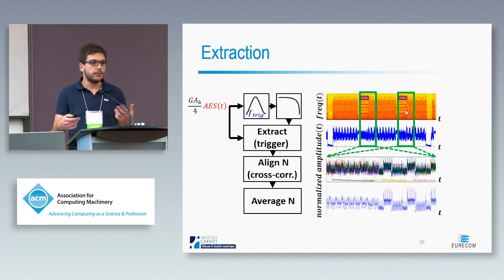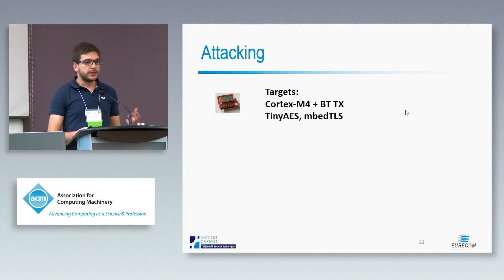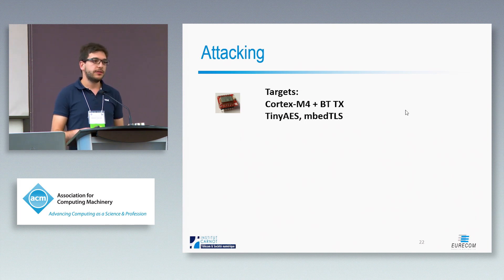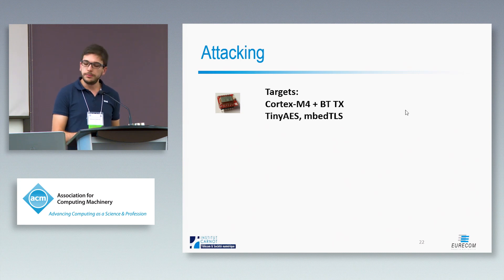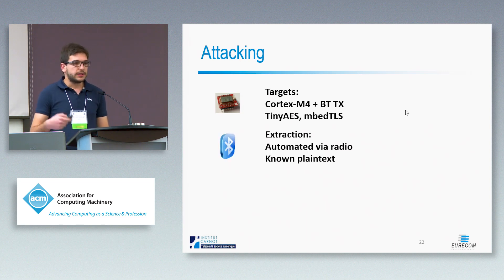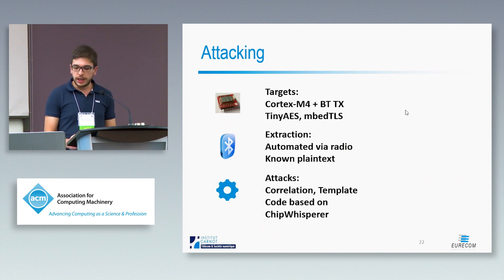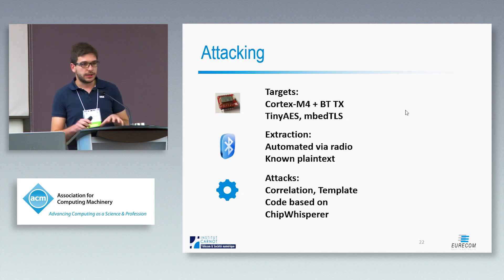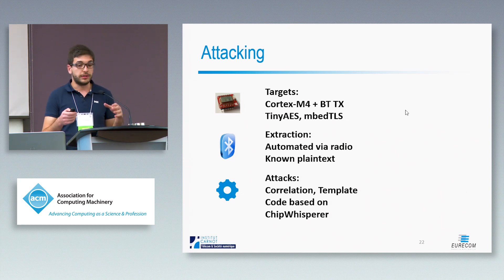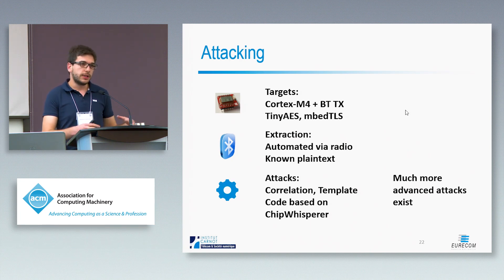Once we have a clean trace, we can move to an attack. Our target device is a chip with a Cortex-M4 and a Bluetooth transmitter, running different implementations of AES taken from the device's SDK: Tiny AES, which is simpler, and the AES inside mbedTLS. We automated the extraction of encryptions — we send plaintext to the device and get the corresponding extracted traces — and then run correlation or template attacks. Our code is currently based on the ChipWhisperer implementation, and there are many more advanced attacks available, so we show the potential of the channel rather than the potential of the analysis techniques.